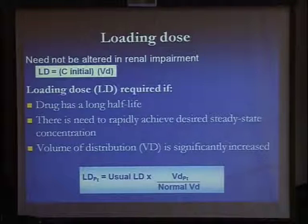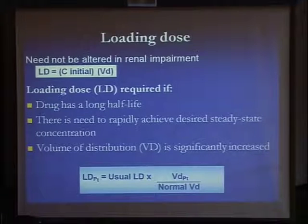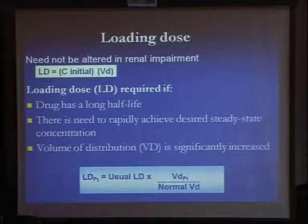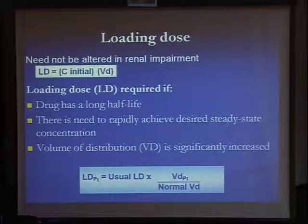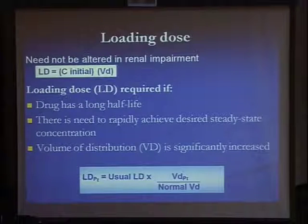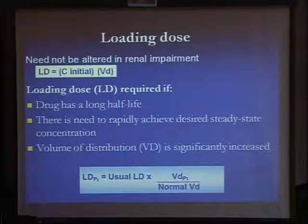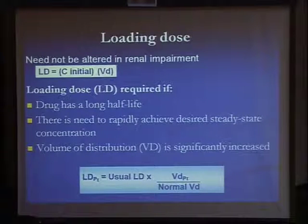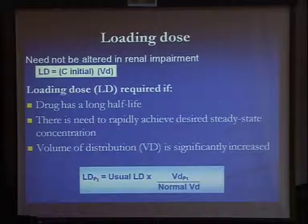Regarding the loading dose, we do not change the loading dose in the presence of renal impairment — it has nothing to do with clearance. A loading dose is required if the drug has a long half-life and there is a need to rapidly achieve a desired steady-state concentration, and if the volume of distribution is significantly increased. The loading dose for the patient can be obtained by multiplying the usual loading dose by the patient's volume of distribution divided by the normal volume of distribution.